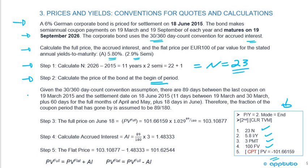Step three: calculate the full price. Given the 30/360 day count convention, there are 89 days between the last coupon on the 19th of March and the settlement on the 18th of June 2015 — that's 11 days from March 19 to March 30, plus 60 days for the full months of April and May, plus 18 days in June. The fraction of the coupon period elapsed is 89/180. To get the full price, multiply that beginning-of-period price by (1.029)^(89/180), giving a full price of 103.10877.